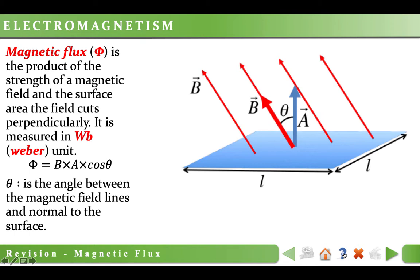As you know, magnetic flux is the product of the strength of a magnetic field and the surface area the field cuts perpendicularly. Even though it is incorrect to define it that way, we can imagine magnetic flux as the number of magnetic field lines passing through a certain area. To calculate magnetic flux, we multiply magnetic field strength by the area we are interested in and by cosine of theta. Theta is the angle between the magnetic field lines and normal to the surface. Normal is the imaginary perpendicular line to the surface. Magnetic flux is measured in Webers.